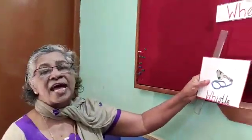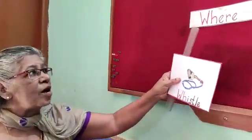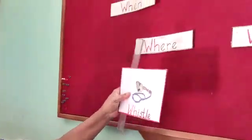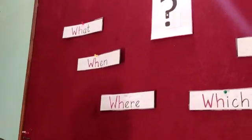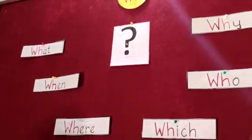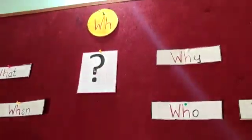Now if you get a story book or have the newspaper, look for words which have the W sound. Circle the W words. Have fun reading. Bye for now.